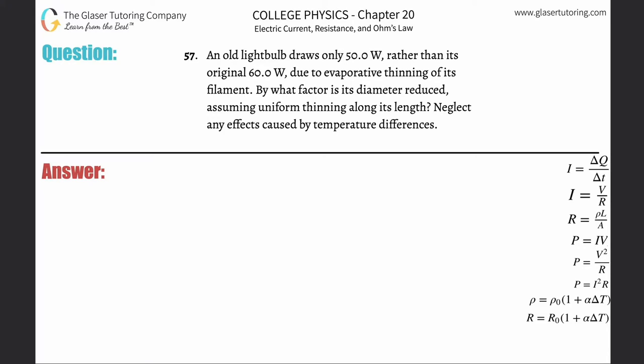Number 57. An old light bulb draws only 50 watts rather than its original 60 watts due to evaporative thinning of its filament. By what factor is its diameter reduced, assuming uniform thinning along its length?